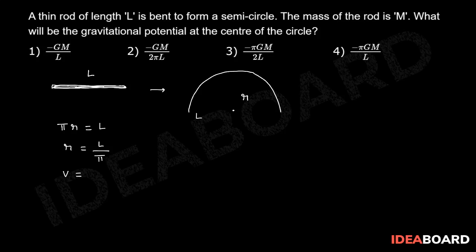V is equal to, we know gravitational potential is minus Gm by R, thereby V is equal to minus Gm by, instead of R, L by pi. Therefore V is equal to minus pi into Gm by L.